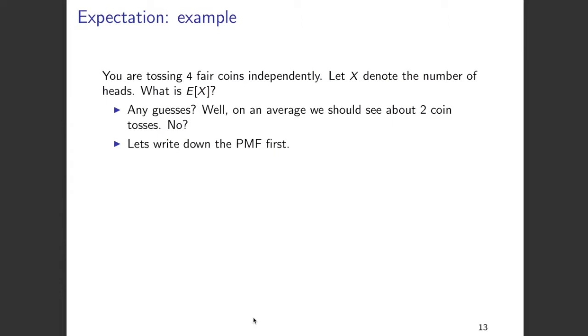Now let's look at a more complicated example. Assume you are tossing four fair coins independently. Let X denote the number of heads in these four tosses. We are interested in finding expectation of capital X. We might guess that on average we should see about two heads. To calculate expectation of X, you first have to write its PMF or probability mass function.